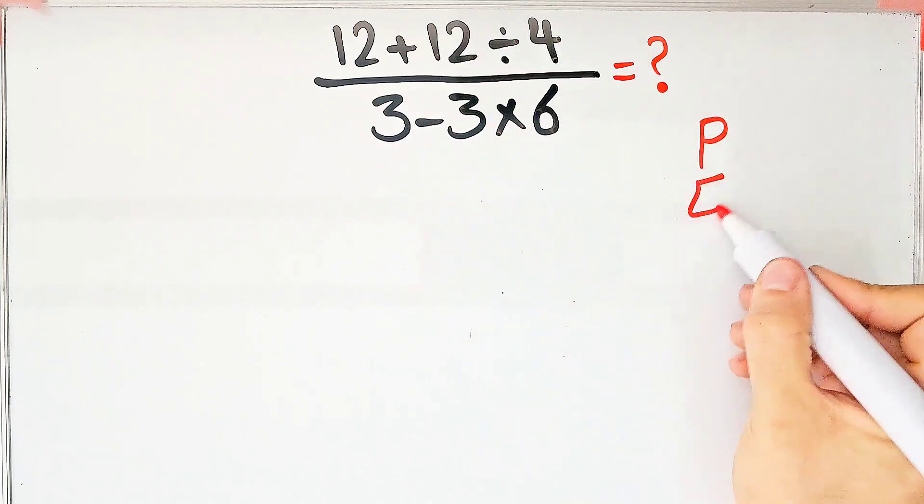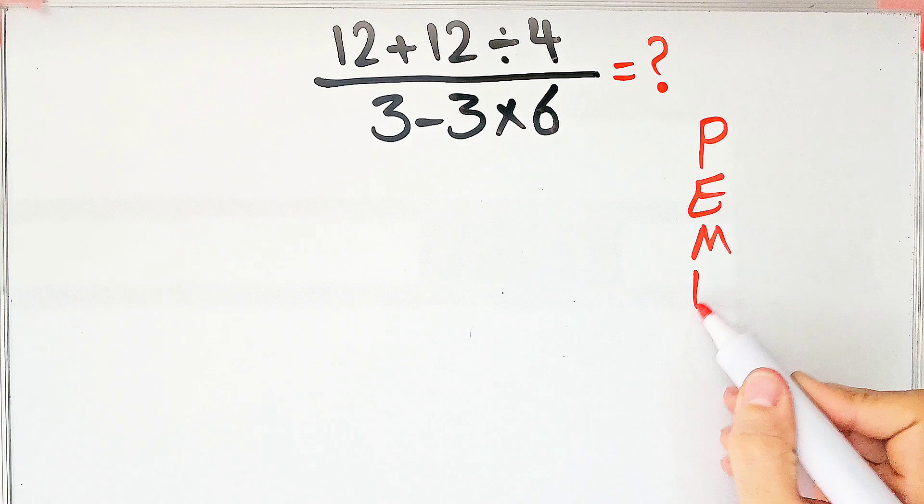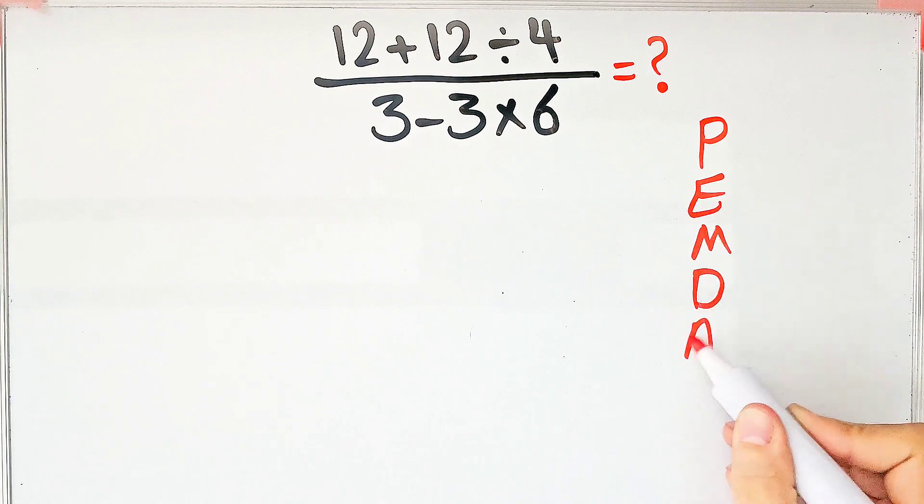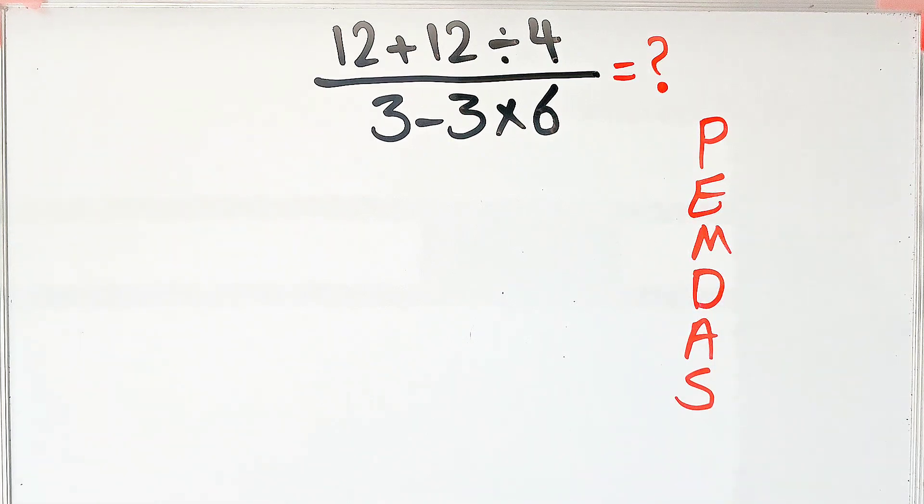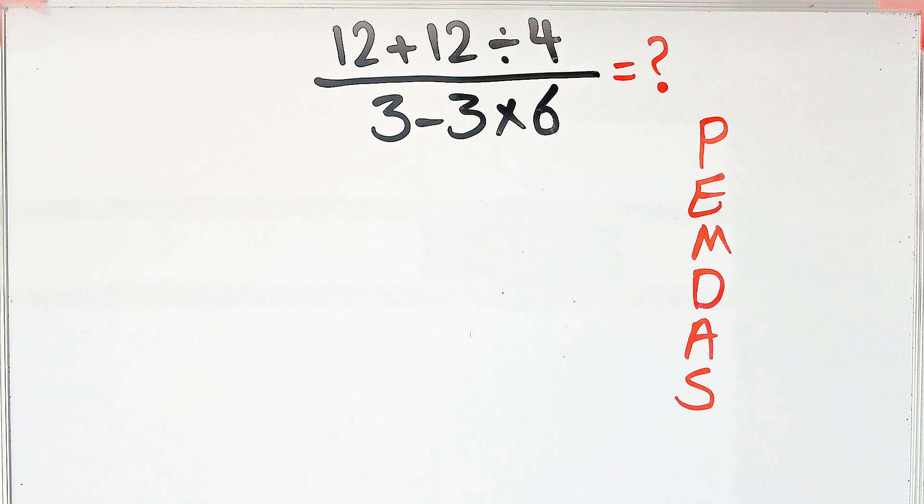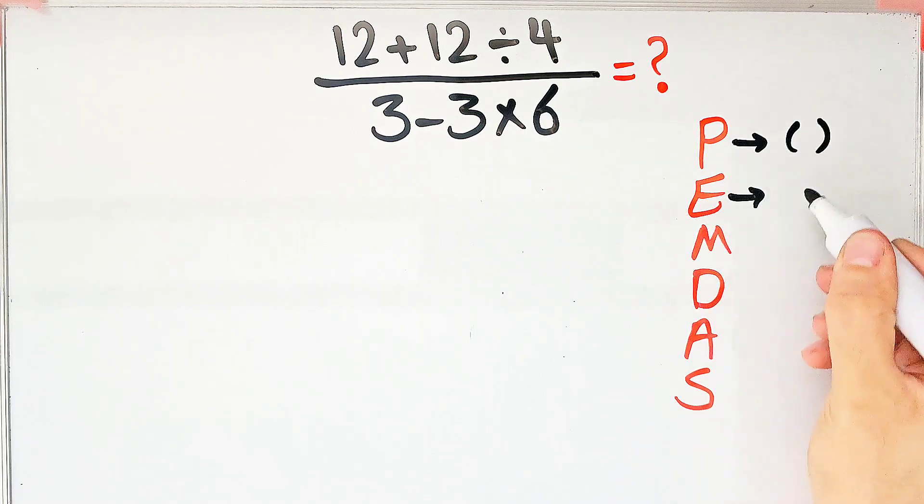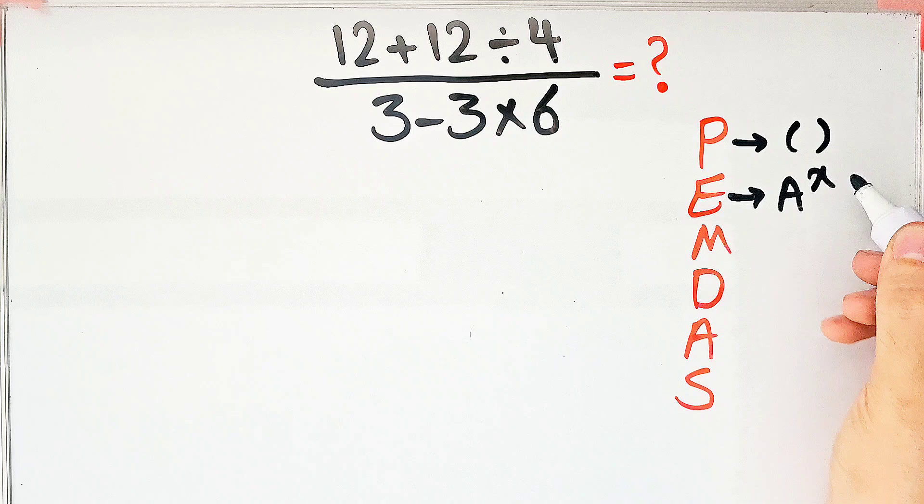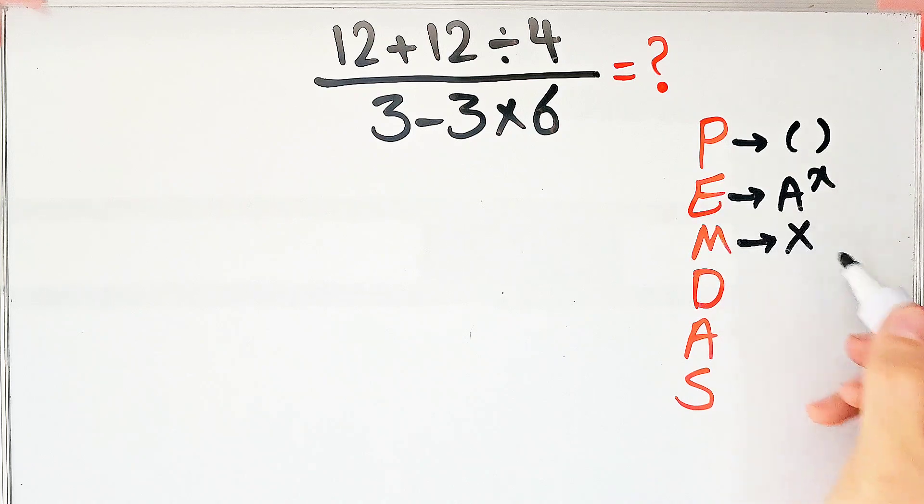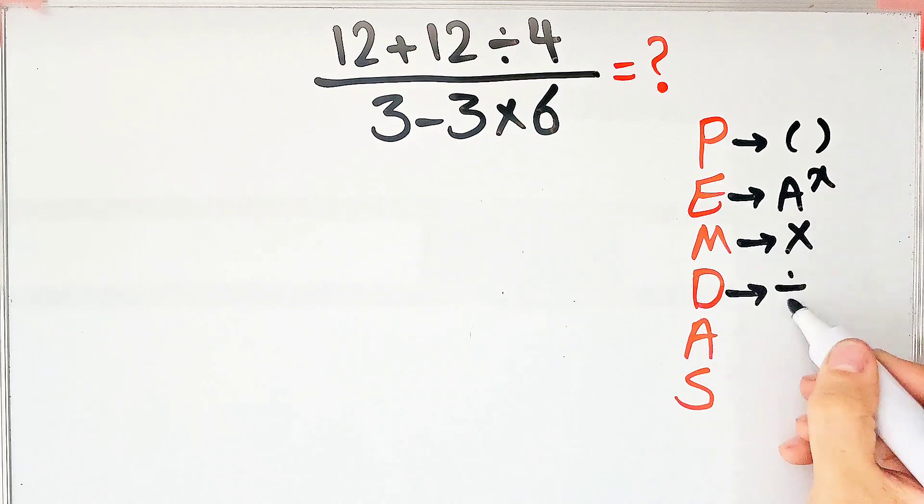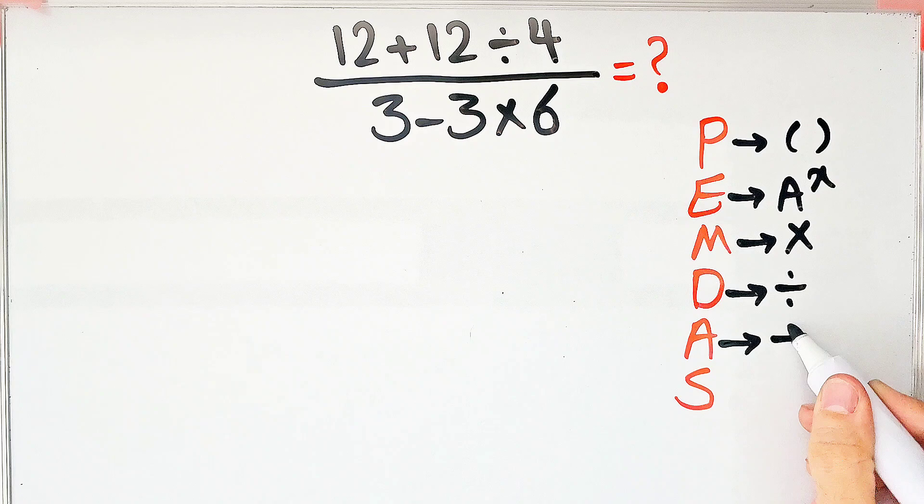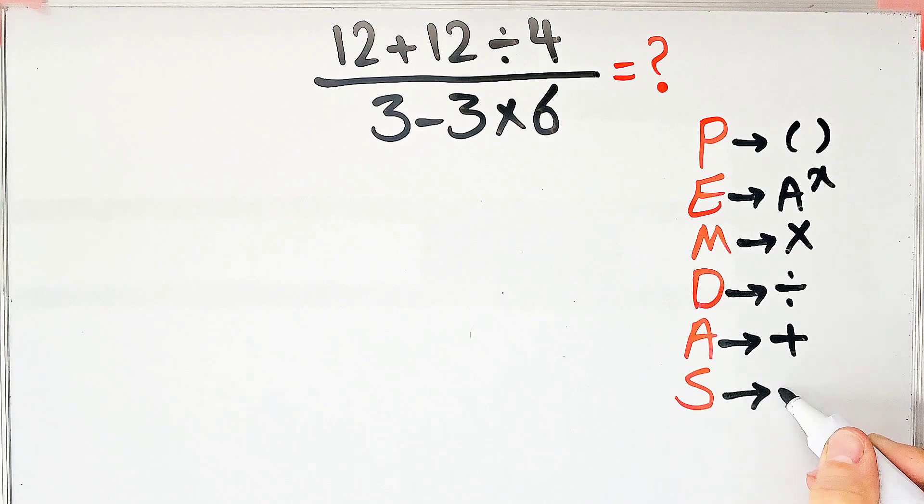PEMDAS shows the priority of mathematical operations. If you don't pay attention to this rule, you get the wrong answer. In this rule, P stands for Parentheses, E stands for Exponent, M stands for Multiplication, D stands for Division, A stands for Addition, and S stands for Subtraction.